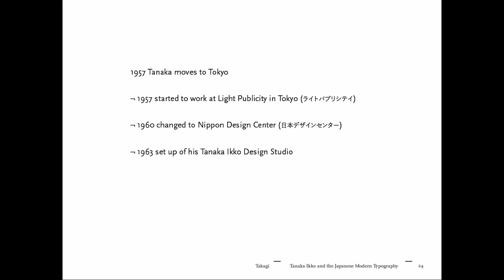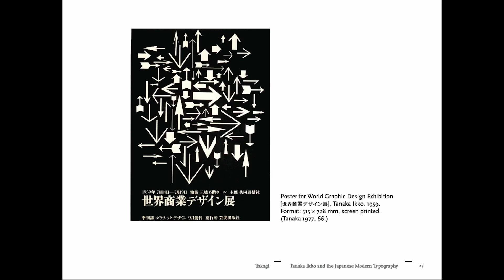That exhibition was also his motivation to move to Tokyo. He started working for Light Publicity, later changing to Nippon Design Center, and finally in 1963 opened his own studio. One of the posters showing the impact of Yamashiro's work is one where he used arrows instead of kanji, doing it in reverse — black to white — already achieving a very strong visual impact.